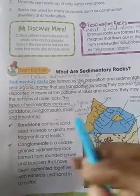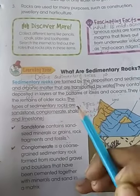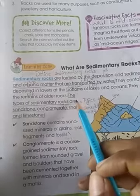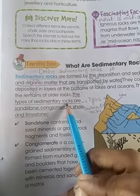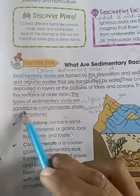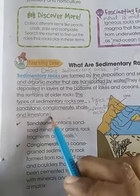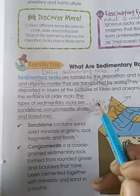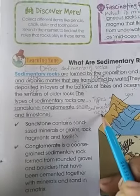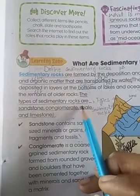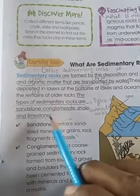The types of sedimentary rocks are sandstone, conglomerate, shale, and limestone. If you have a question about the types of sedimentary rocks, the answer is: sandstone, conglomerate, shale, and limestone.